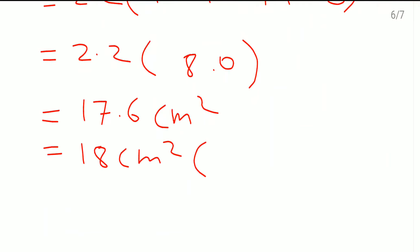In the bracket you can write down approximately, or you can write down a short form, approximately. So the surface area of the solid, 18 cm² approximately. I hope all of you understood this sum. Thank you.